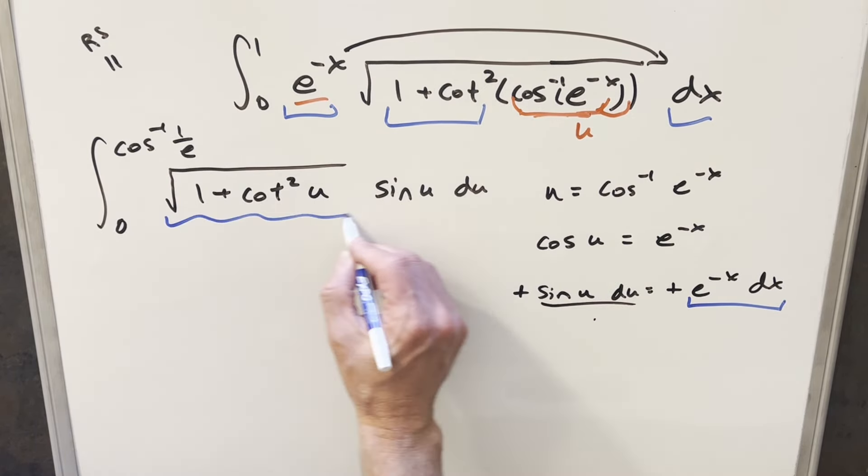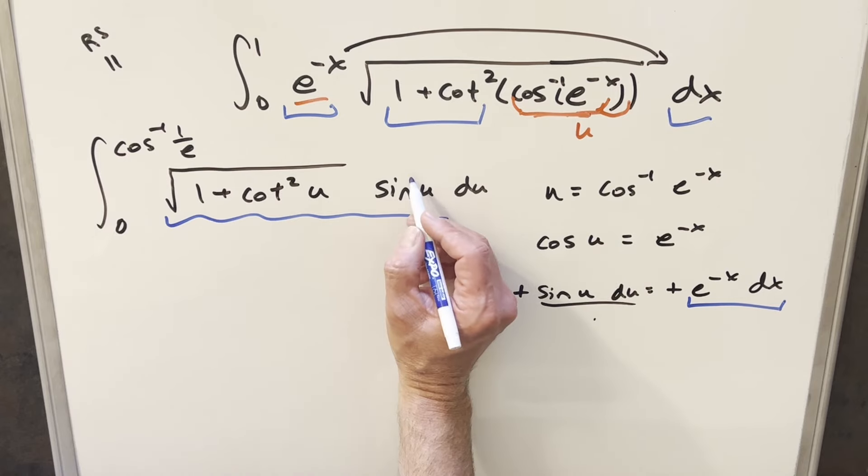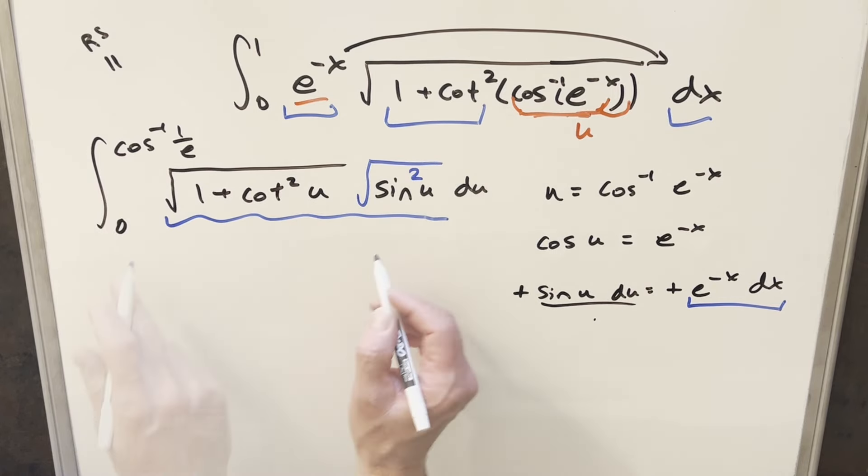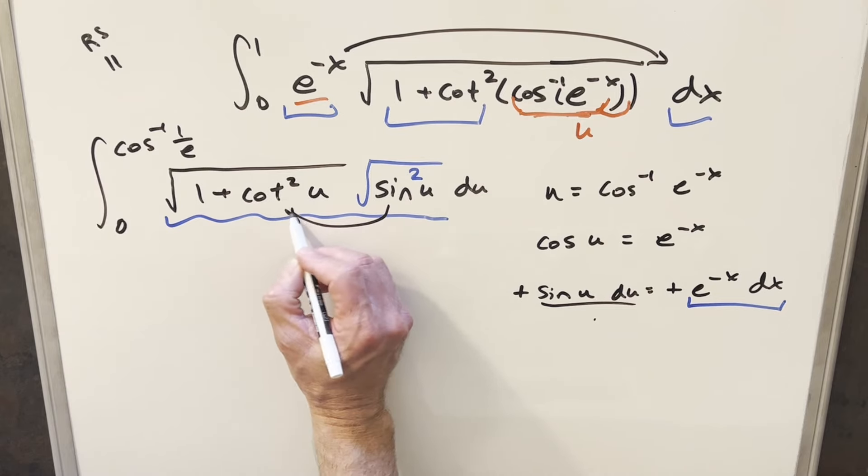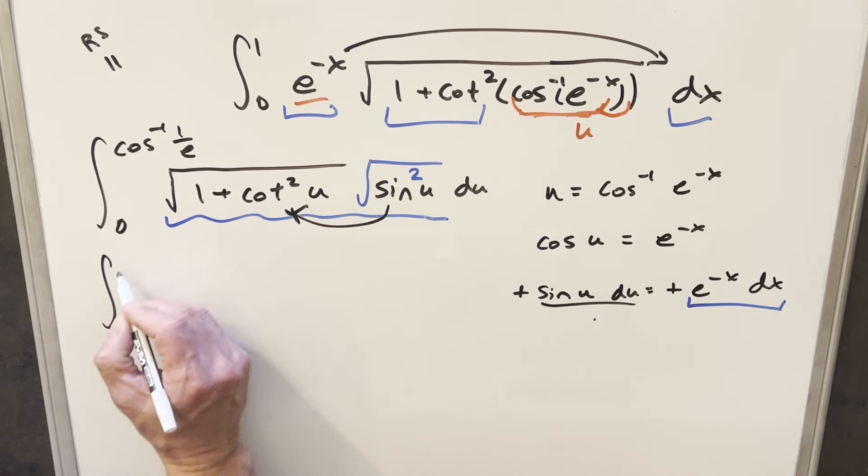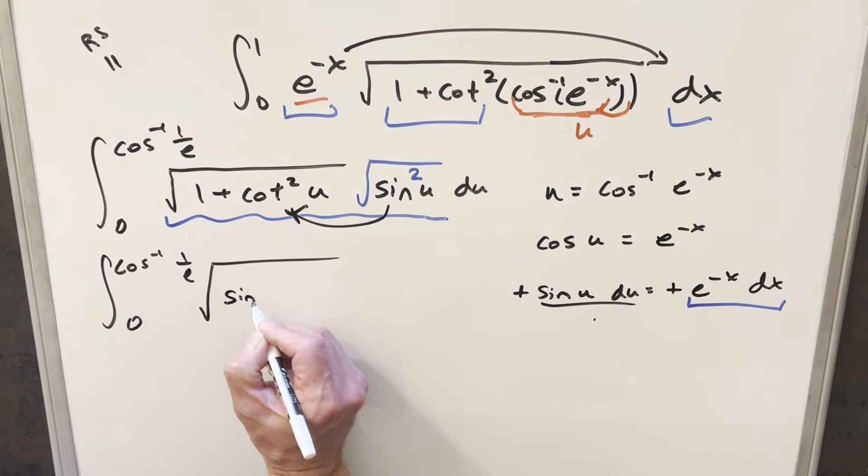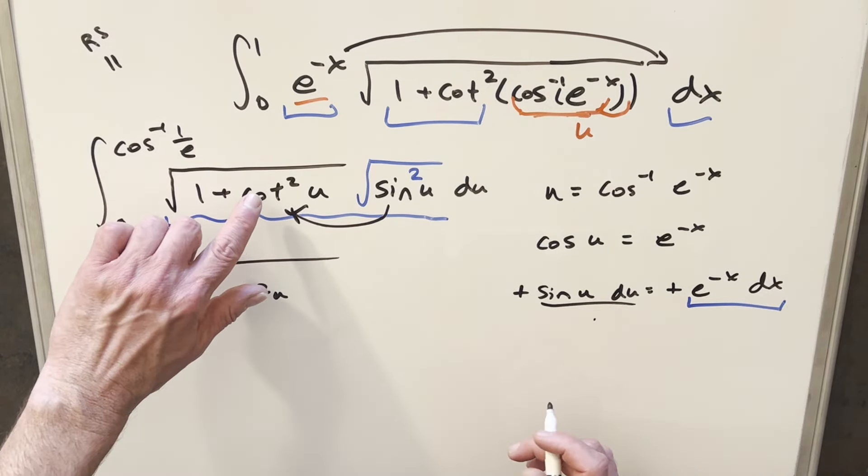But then now let's just get some simplification. What I can do is I can rewrite this sine u. I can write it as sine squared inside of a radical. And so then I can combine these two radicals, just multiplying in this sine squared. When I do this, multiplying sine squared u times one is just going to give me sine squared u.